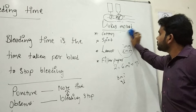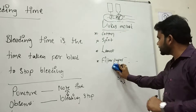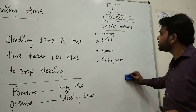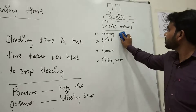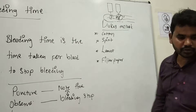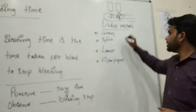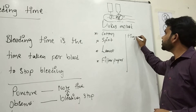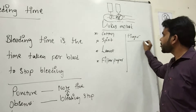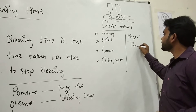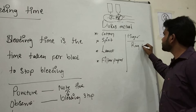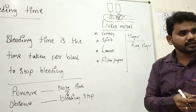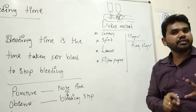So first we take cotton, spirit, and lancet. Now we will talk about the procedure. The first thing is you have to clean the finger. Which finger? Ring finger. Why only ring finger?